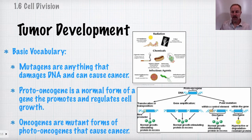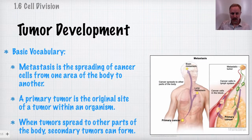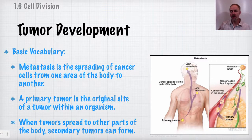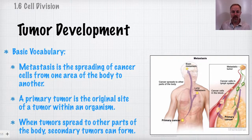We don't want proto-oncogenes or any genes to be mutated. If a mutation occurs and a tumor forms, the original site is called the primary tumor. The primary tumor can spread to other parts of the body — a process called metastasis. When these cells spread and establish new tumors elsewhere, those are called secondary tumors. So when a primary tumor metastasizes, it gives rise to secondary tumors.